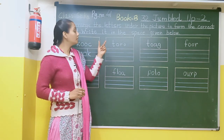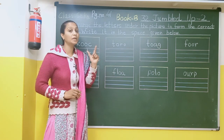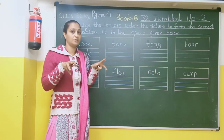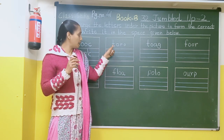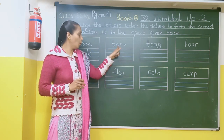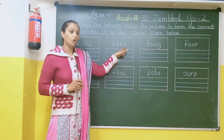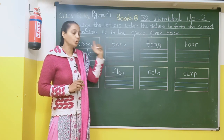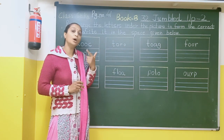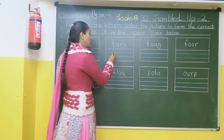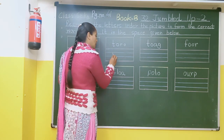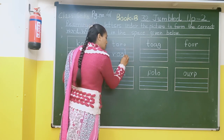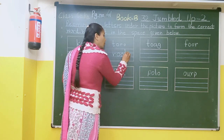After that here there is another image. Here we will arrange the letters to form the word ROOT. So here we will write R-O-O-T. Roof. Okay.